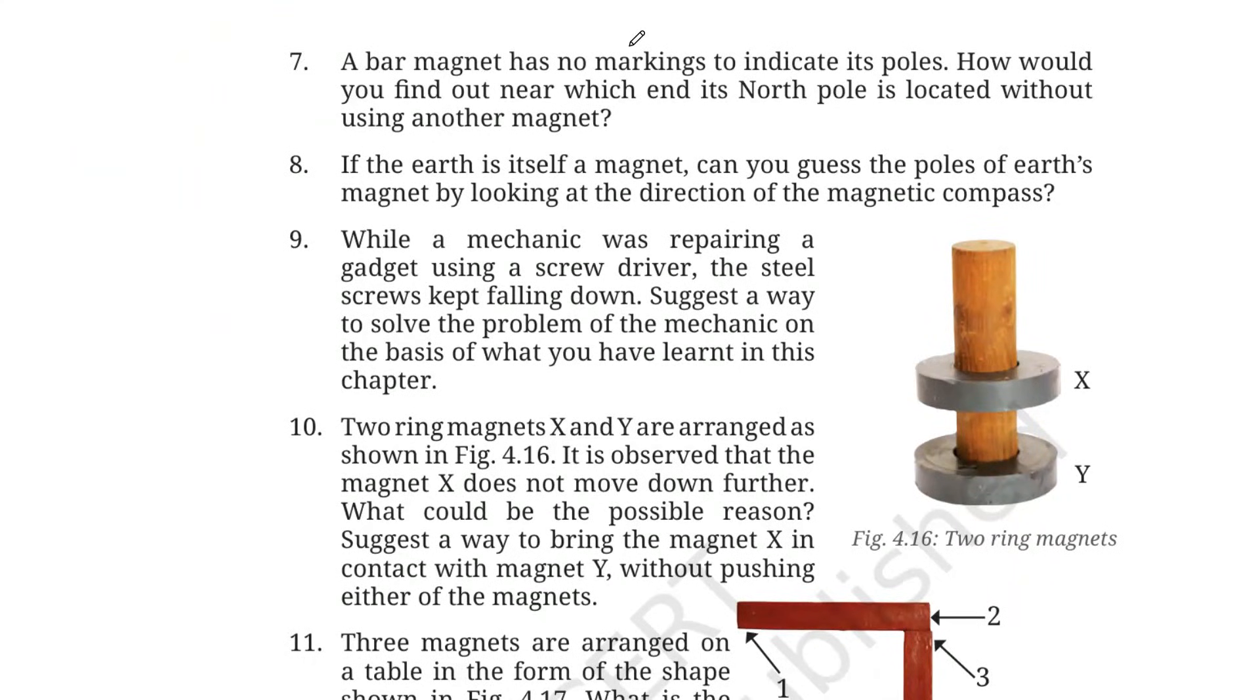Number 7. A bar magnet has no markings to indicate its poles. How would you find out which end its north pole is located without using another magnet? Again, you don't have to use another magnet over here. So how are you going to do? Suspend the magnet freely, first of all. When you suspend it freely, what will happen? It will align itself in the north-south direction and the end pointing towards the north direction will be the north pole and the end pointing the south direction will be the south pole. So now you can easily mark the north pole.